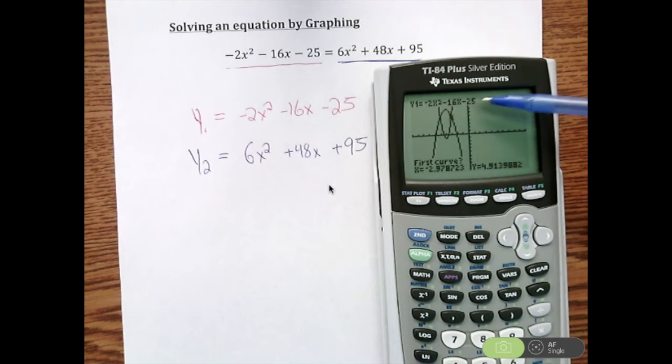First question it asks you, it says, alright, here's y1. And it's asking, do you want to use that for your first curve? Well, yes. That's what we had for y1. That's what we want to use. So I hit Enter. And then it's going to switch over to y2. And it's going to ask, are you sure you want to use this as your second curve? It is. So I'm going to hit Enter again.